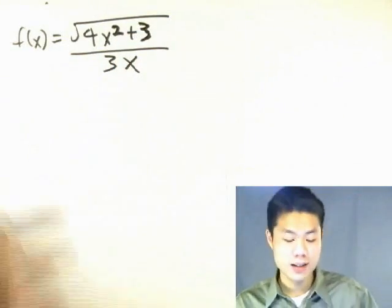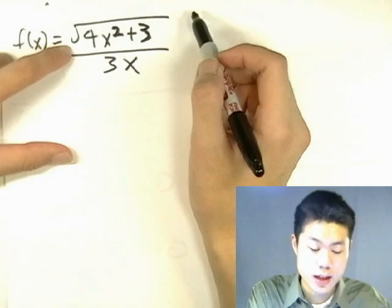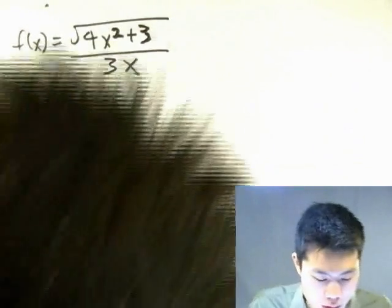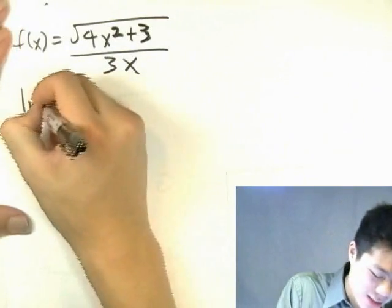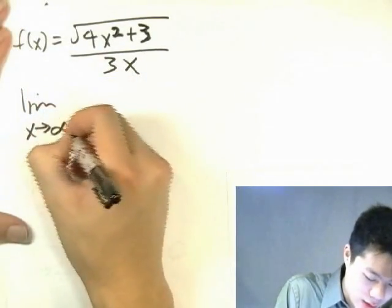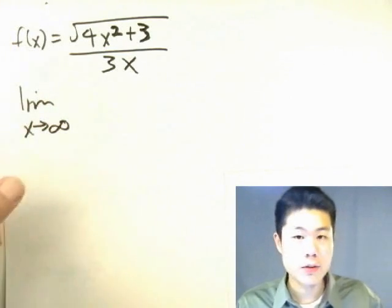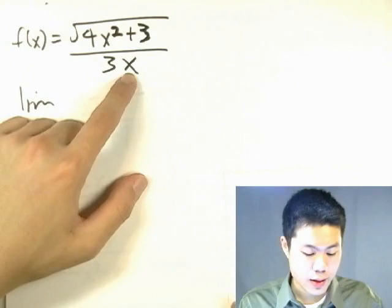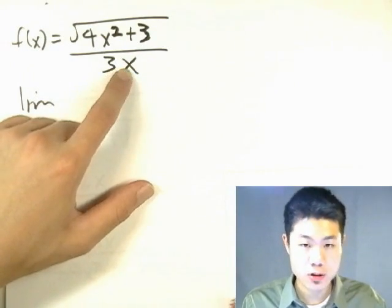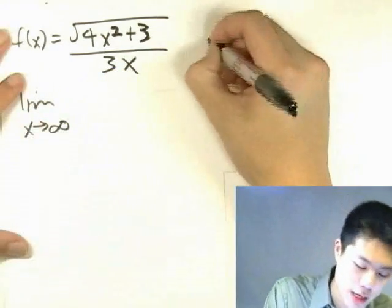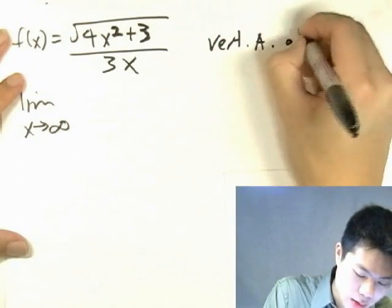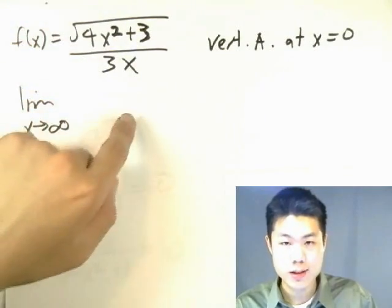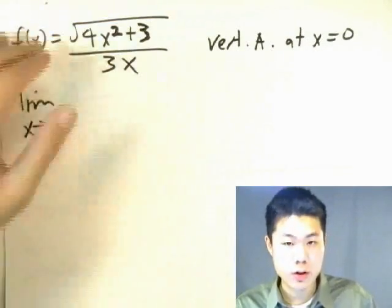The next example is f(x) = √(4x² + 3) all over 3x. Is there a vertical asymptote? Yes — setting 3x equal to 0 gives x = 0. So we have a vertical asymptote at x = 0. And the top doesn't equal 0 when the bottom equals 0, because √(0 + 3) = √3.